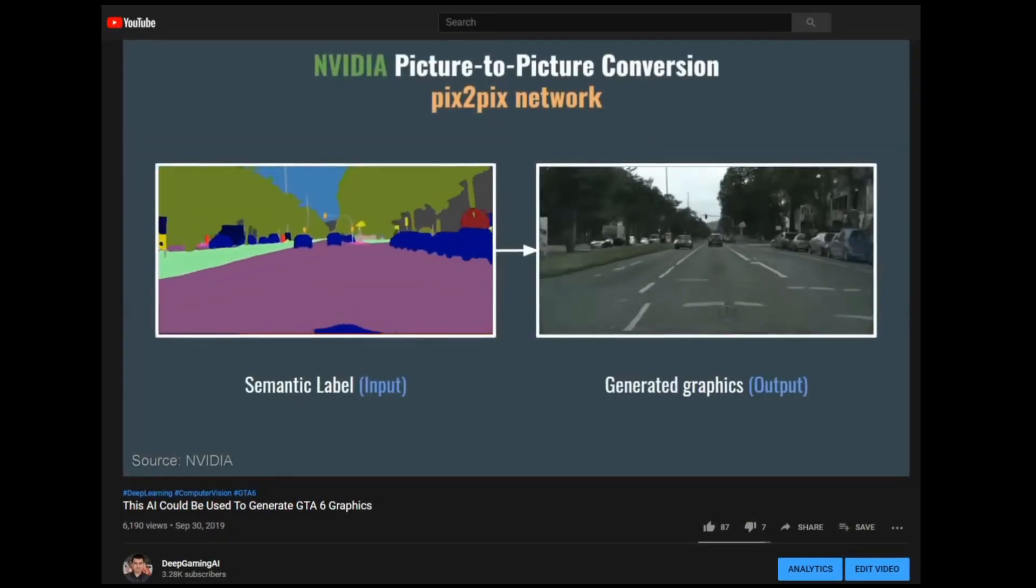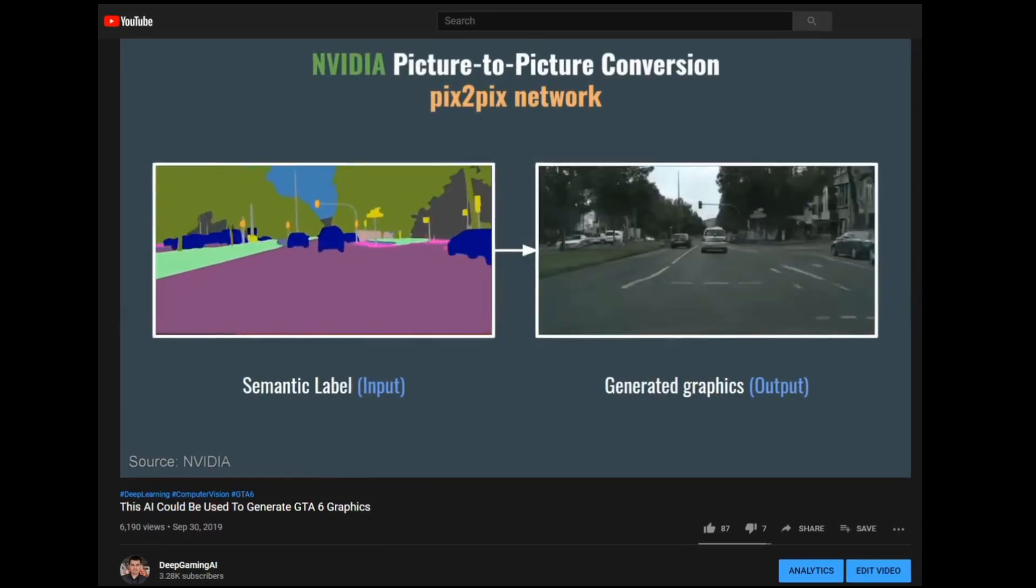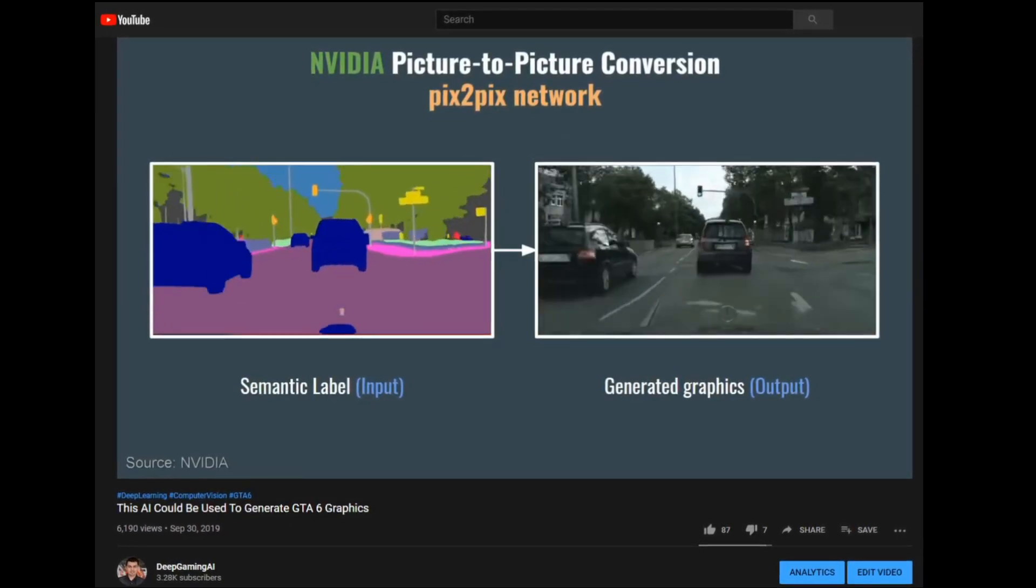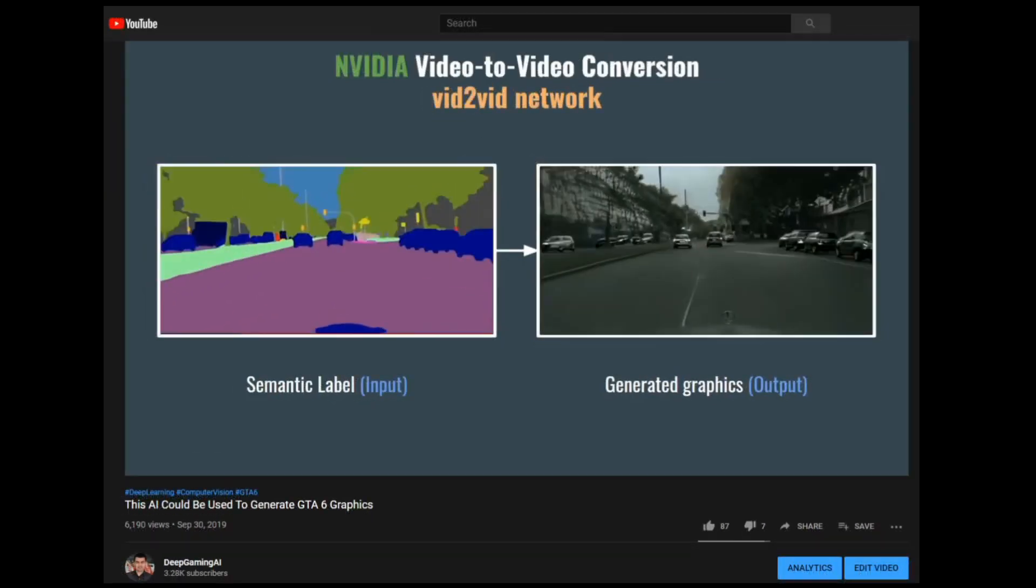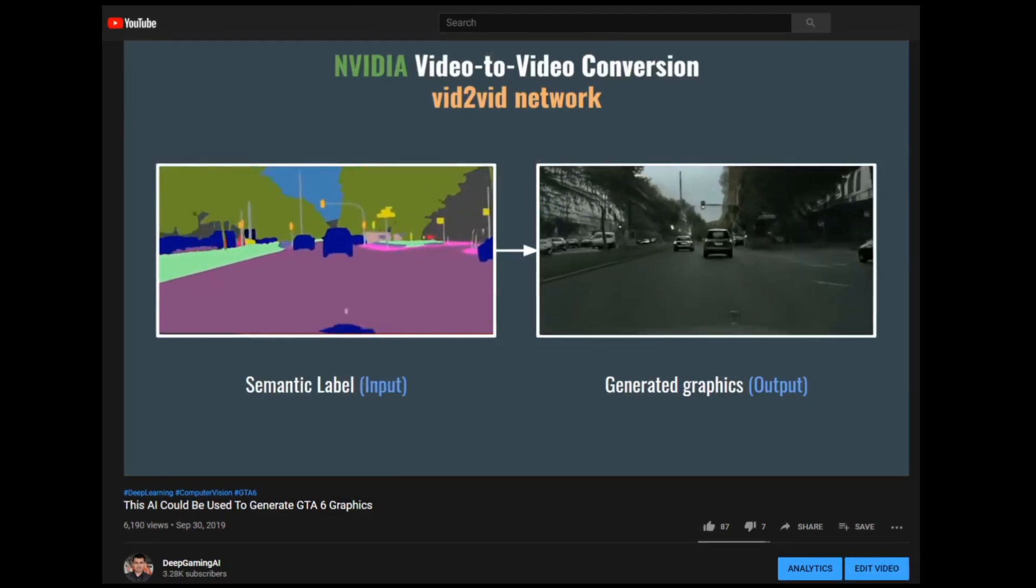We saw deep learning models like NVIDIA's Pix2Pix paper around in 2018 and the Wid2Wid paper that came out around 2019.